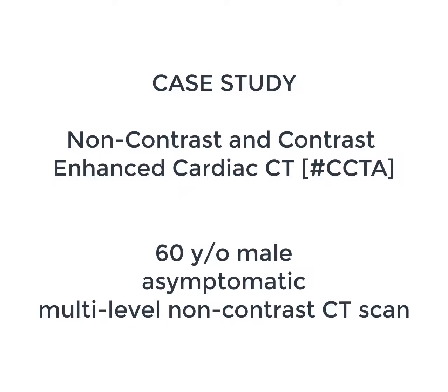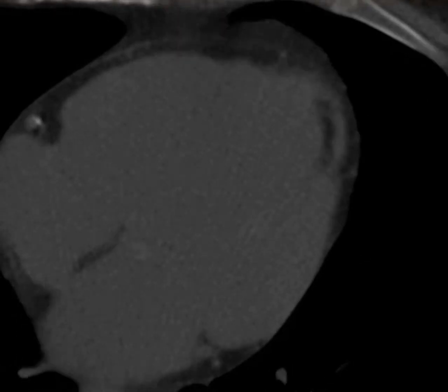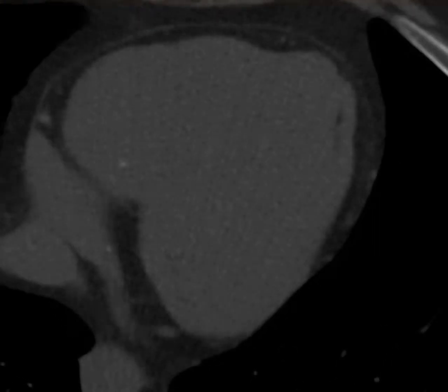This is an absolutely fascinating study of non-contrast and contrast-enhanced CT, looking at a 60-year-old asymptomatic individual undergoing a multi-level non-contrast CT scan. Look at the arrow. As you go down through the individual slices, you can see an oblong-shaped area of very low density that appears to have normal epicardium on the other side of the region.